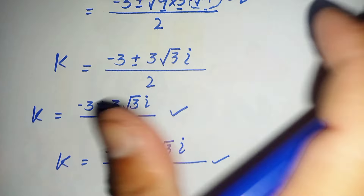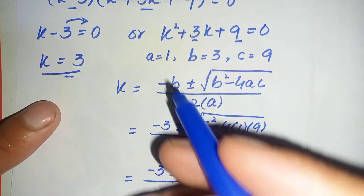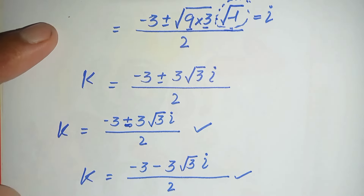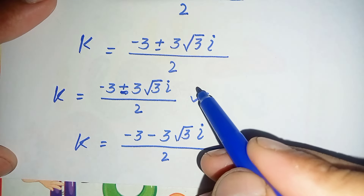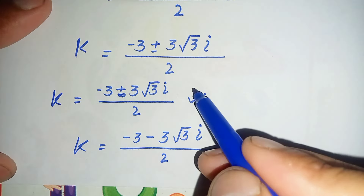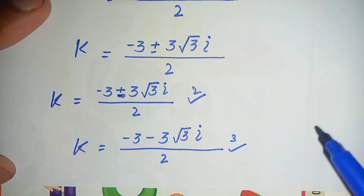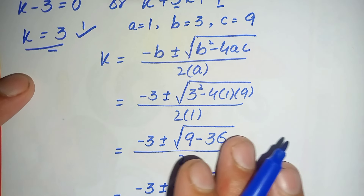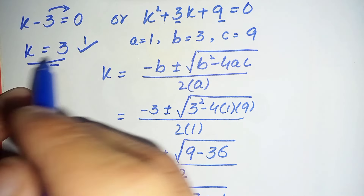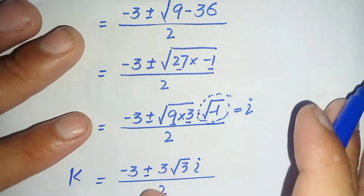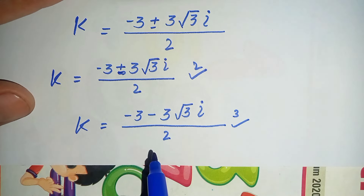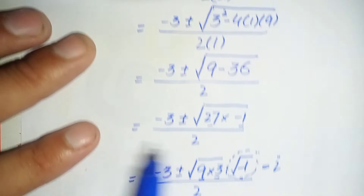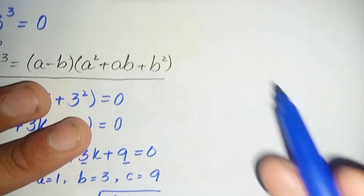So finally we have three solutions. The first is the real solution k equals 3. The second and third are the two complex solutions. We will only verify the real solution k equals 3, as verifying the complex solutions would take too much time due to lengthy simplification.